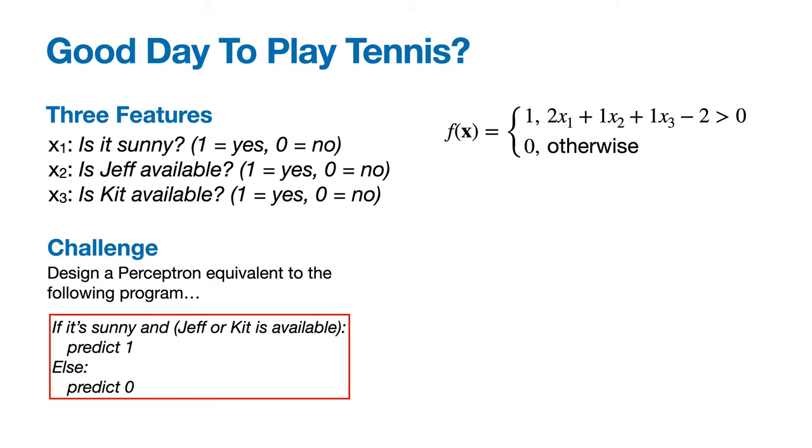Here's the weights and bias I came up with. It's easier to think of the bias as a threshold, so I'm going to move it to the right-hand side. So in order to predict yes, it's a good day to play tennis, you can see how it has to be sunny.